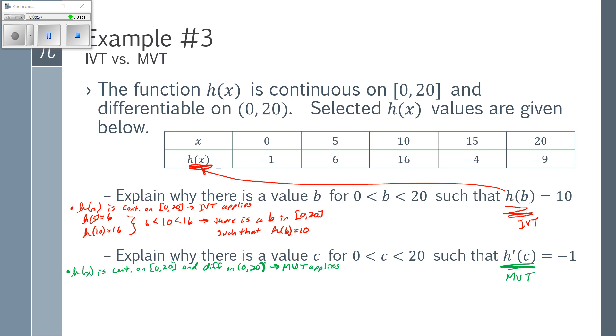So now, I need to find my slopes. So if I find my slope between 0 and 20 that's going to be negative 9 minus negative 1 which is negative 8 over 20 well that's not equal to negative 1. If I do 5 to 15